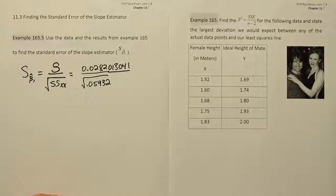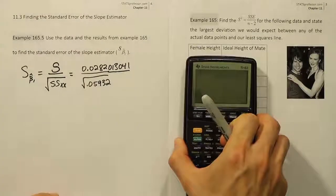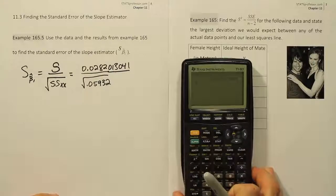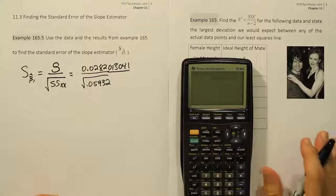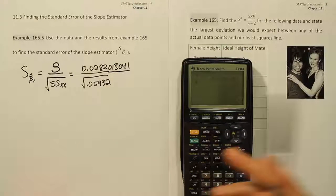Alright, so now that we have those things from 165, let's go ahead and do the calculation to finish the problem. So what we want to do is to take that s value which I've already entered into my calculator and I'm going to simply divide it by the square root of this .05932.